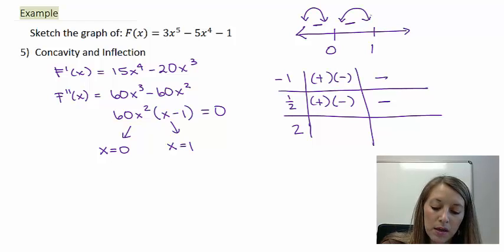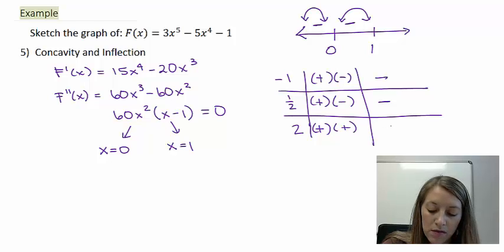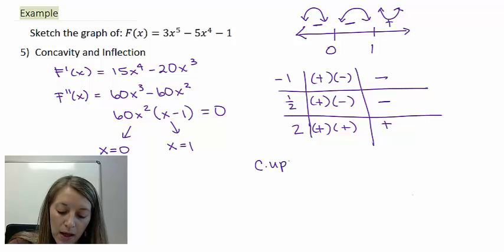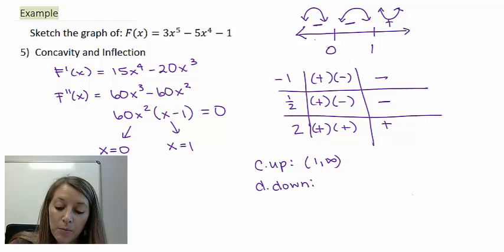Now two: two squared times 60 is positive and two minus one is positive, so that tells us this is positive and that this is concave up. Okay, so if we want concave up like a cup, that's happening from one to infinity. If we want concave down like a frown, that's happening between negative infinity and one.